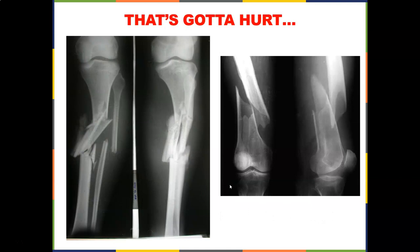Severe fractures — like the multiple fractures shown here from snowboarding — may take 12 to 16 weeks and will require surgery with pins and screws. A spiral fracture of the femur is another serious injury that takes a long time to heal.